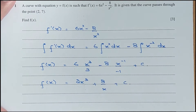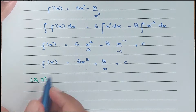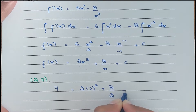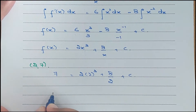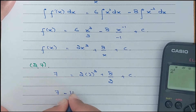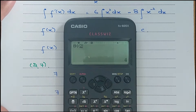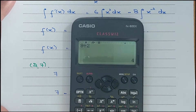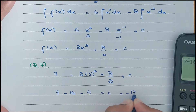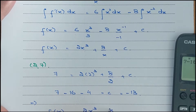Now f(x) simplifies to 2x³ plus 8 over x plus c. To get the value of c, we use the point (2, 7): the curve passes through these points. So x is 2 and y is 7: 7 equals 2(2³) plus 8/2 plus c. So 7 minus 16 minus 4 gives c equals negative 13. The equation of the curve is f(x) equals 2x³ plus 8/x minus 13.